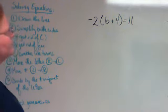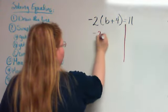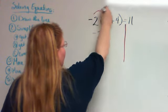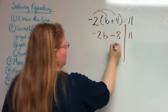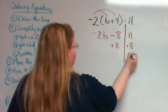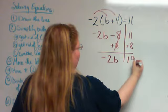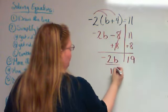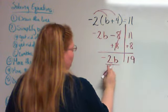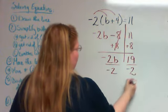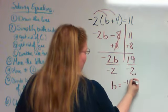Okay, draw my line. Negative 2 times the quantity b plus 4 equals 11. Distribute to get negative 2b minus 8 equals 11. Add 8 to both sides. Negative 2b equals 19. Divide both sides by negative 2. b equals negative 19 over 2.